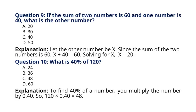Question 9. If the sum of two numbers is 60 and one number is 40, what is the other number? A. 20, B. 30, C. 40, D. 50. Explanation: Let the other number be X. Since the sum of the two numbers is 60, X plus 40 is equal to 60. Solving for X, X is equal to 20. So the correct answer to question 9 is option A. 20.